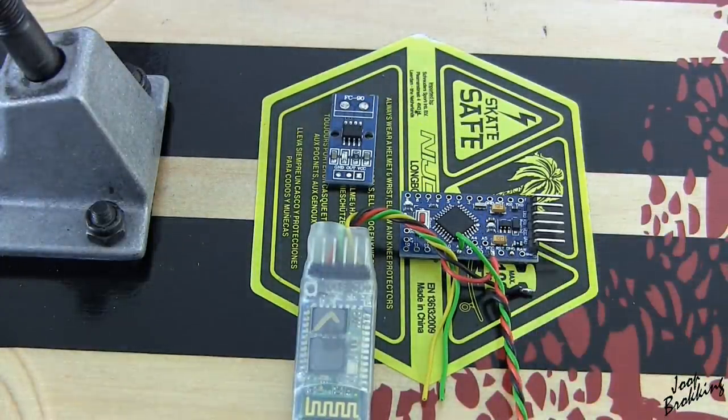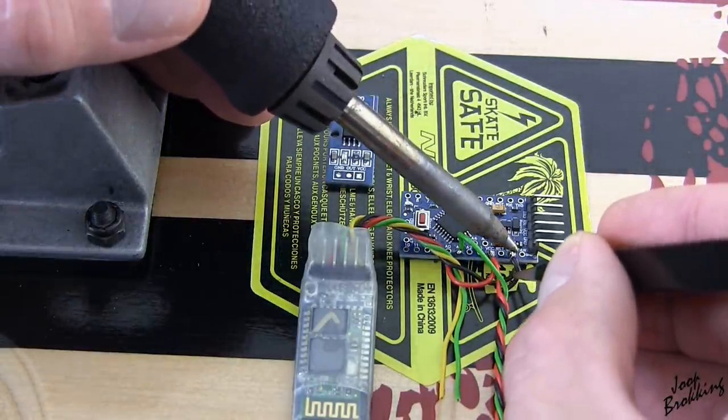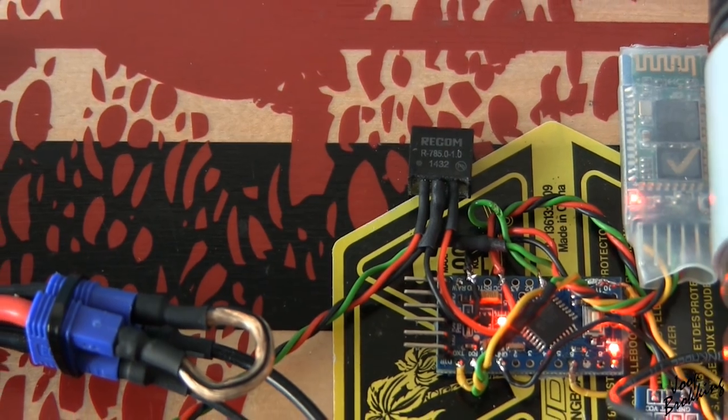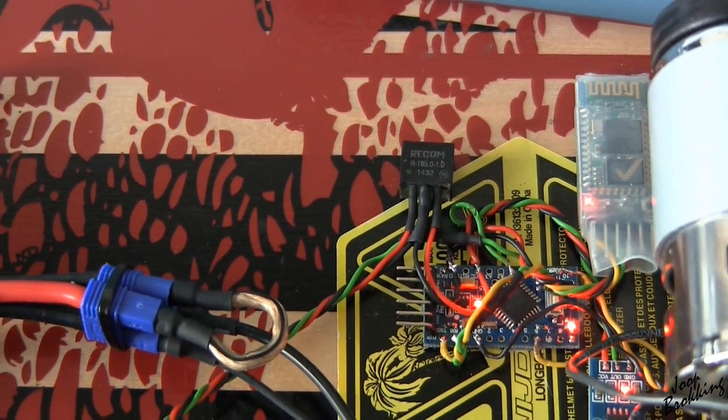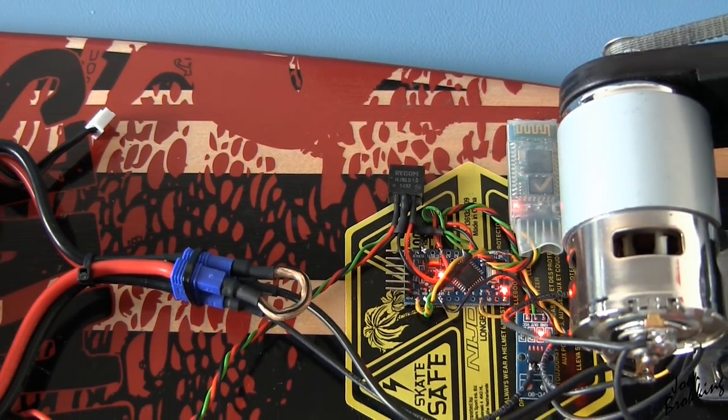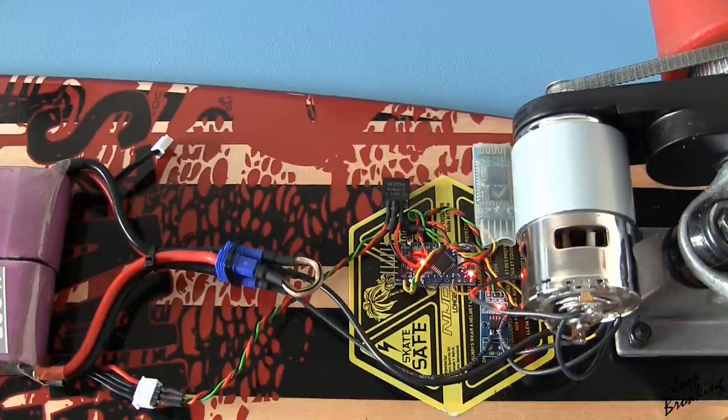Initially, I used the onboard voltage regulator of the Arduino Pro Mini to get the 5 volt that is needed for the current sensor and the Bluetooth transceiver. But after some testing, I ended up using an external 5 volt power supply. The onboard voltage regulator of the Pro Mini could not handle the load in my case.